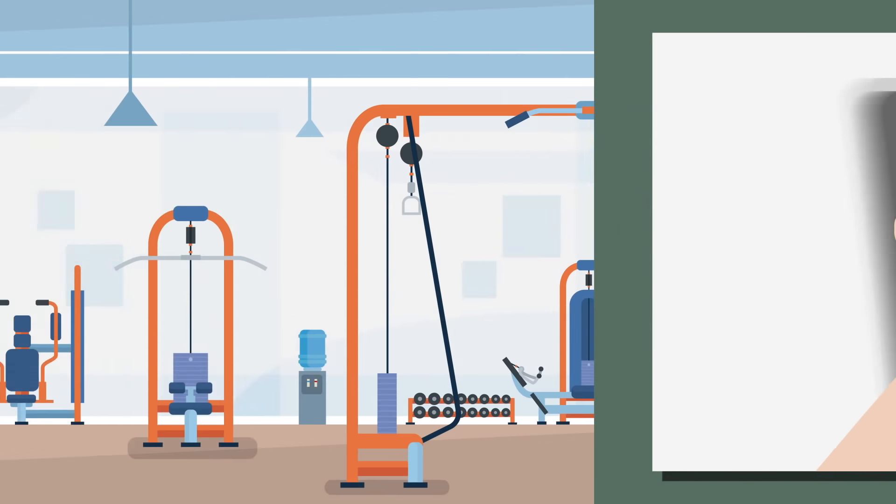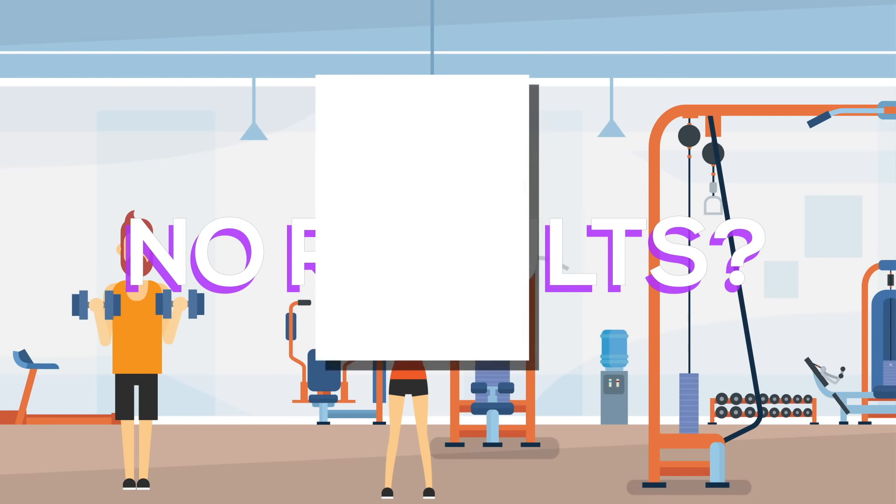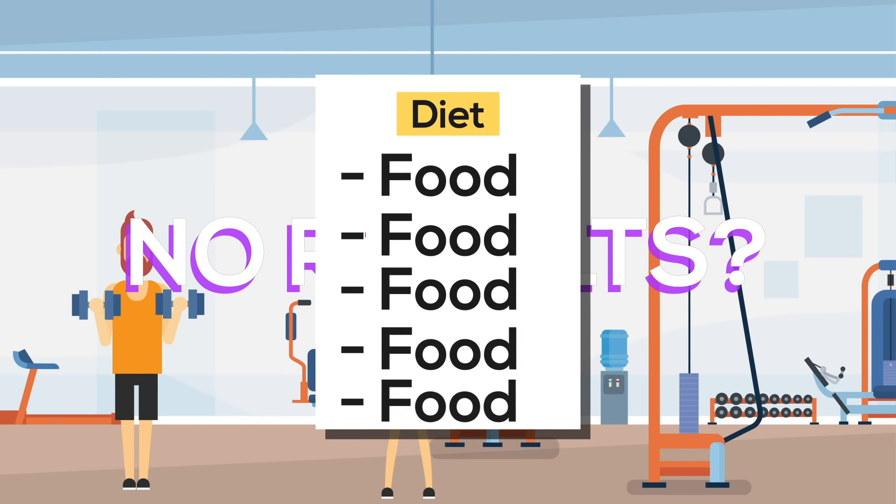That's why if you are going to the gym 5 times a week, trying your best to lose a couple of pounds, and yet you don't see any results, you probably have to adjust your diet because that's where the problem is.